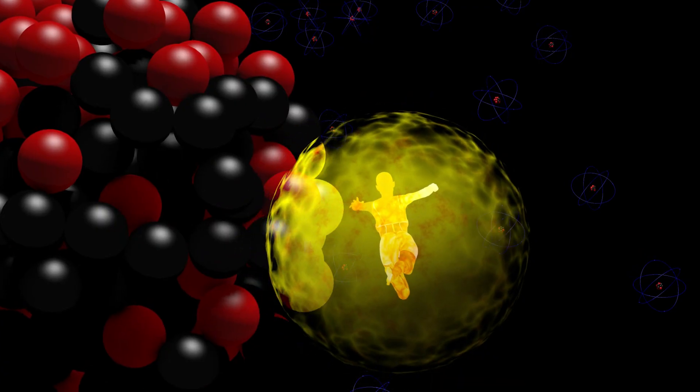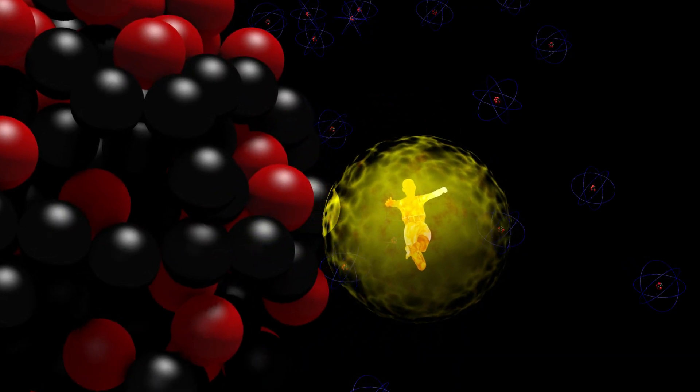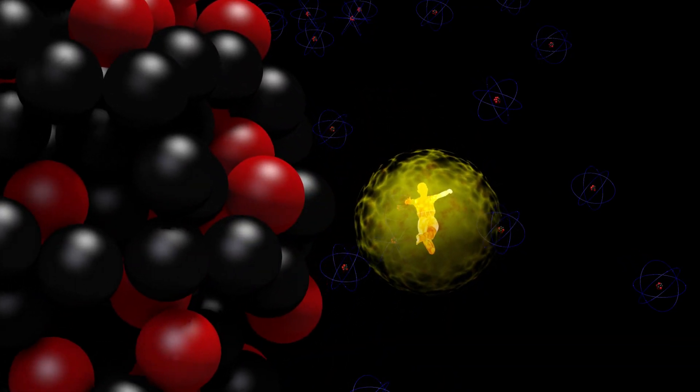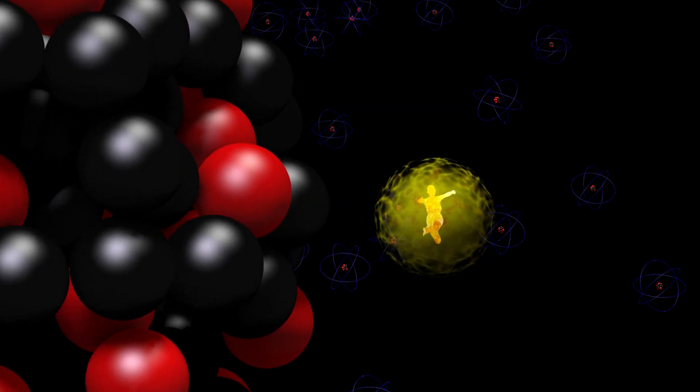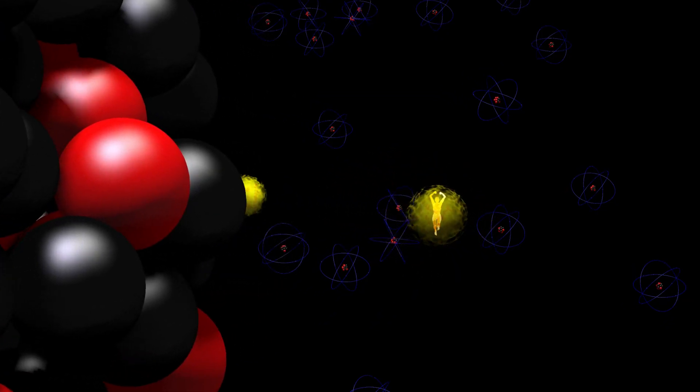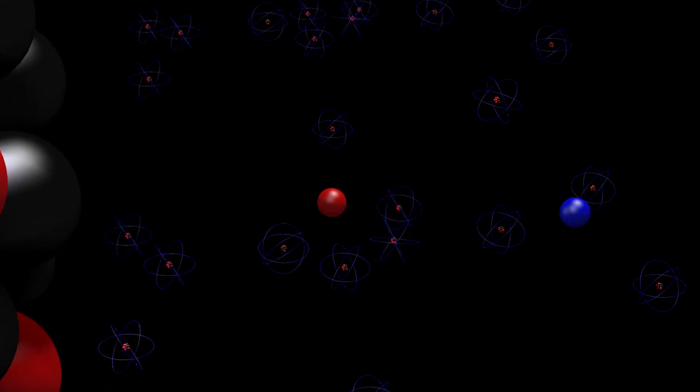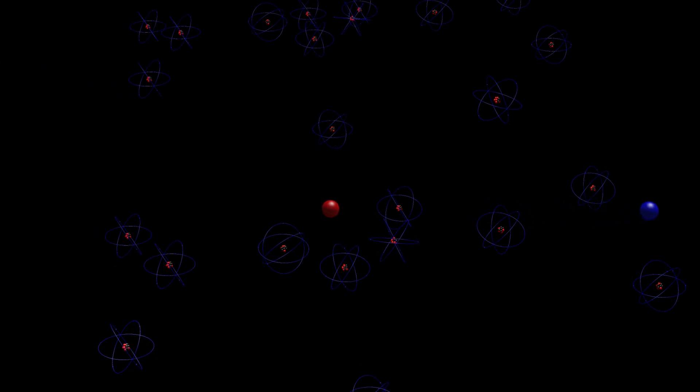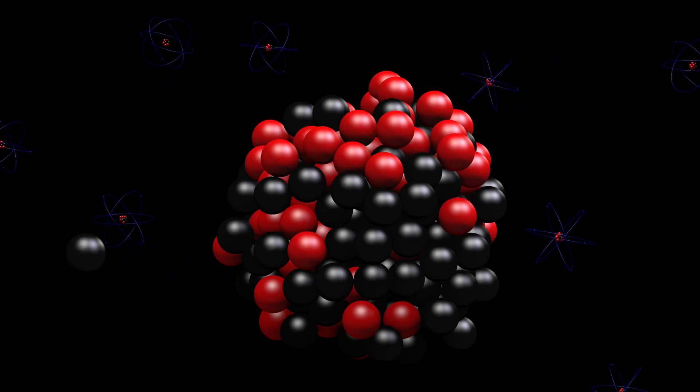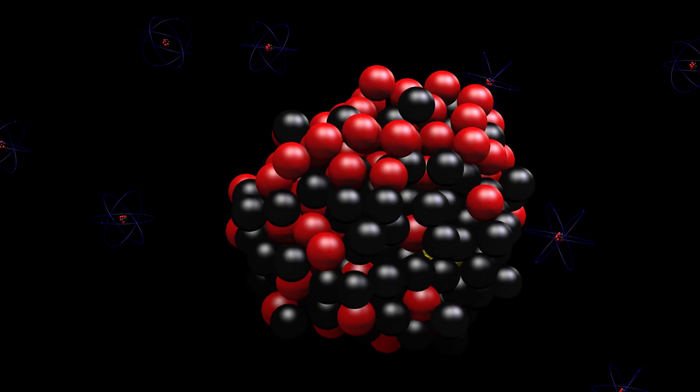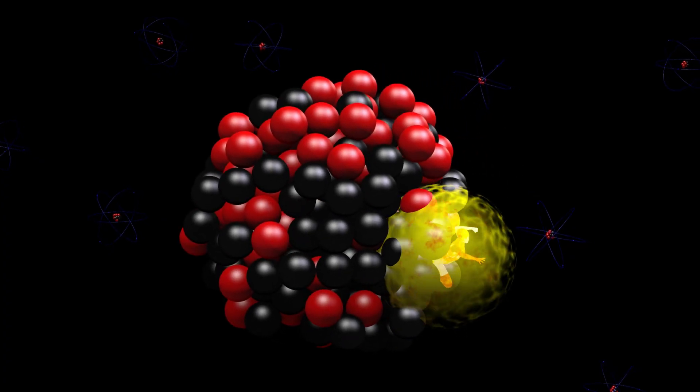Gamma rays typically have far more energy than all other types of photons, including X-rays. However, what determines if we call a photon a gamma ray is not how much energy it possesses, since a very low energy gamma ray can actually have less energy than a very high energy X-ray. We define a gamma ray as a photon which is generated by the nucleus of an atom.